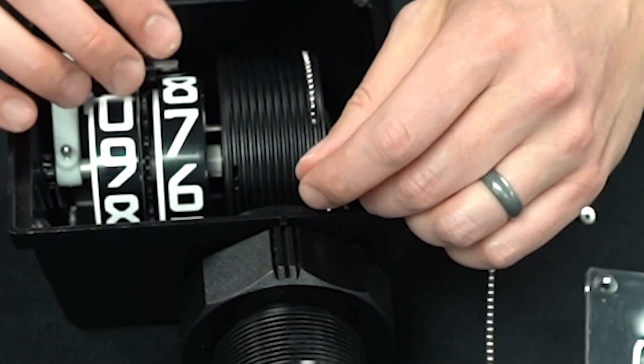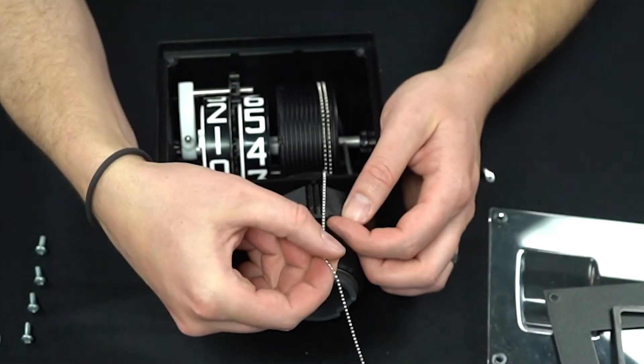Slowly let the chain retract back up into the gauge. The chain will wrap around the pulley in the correct way.